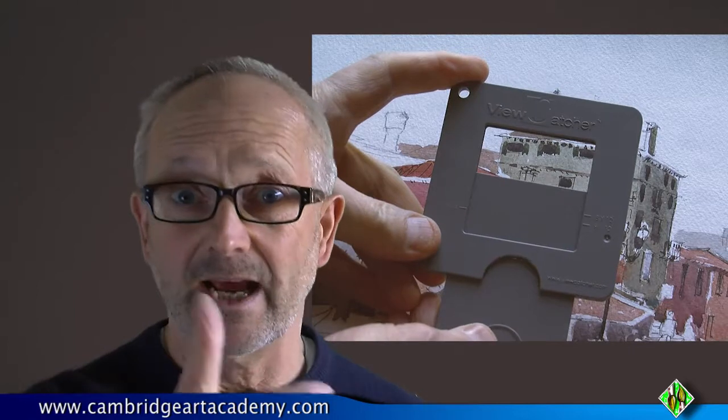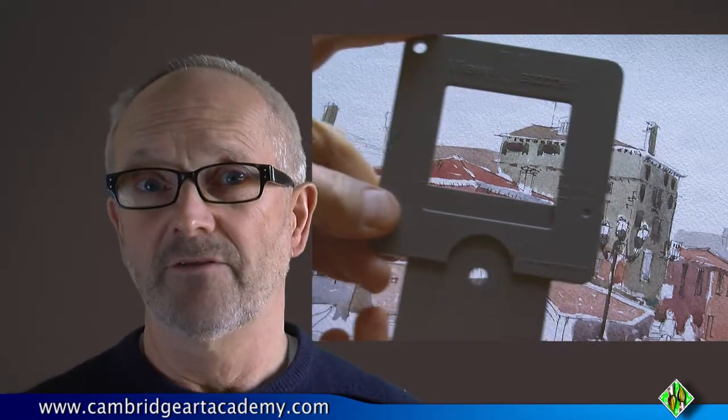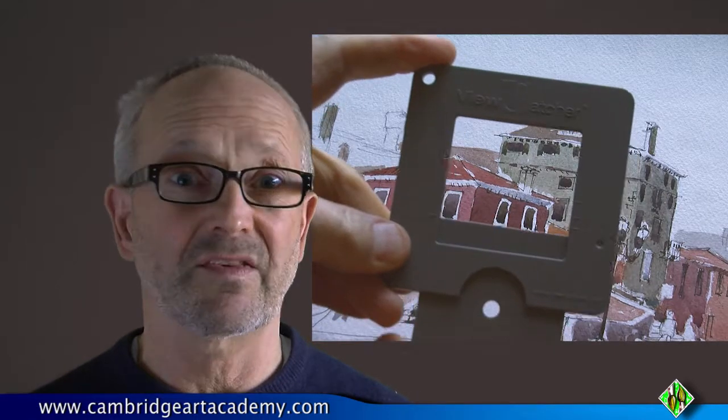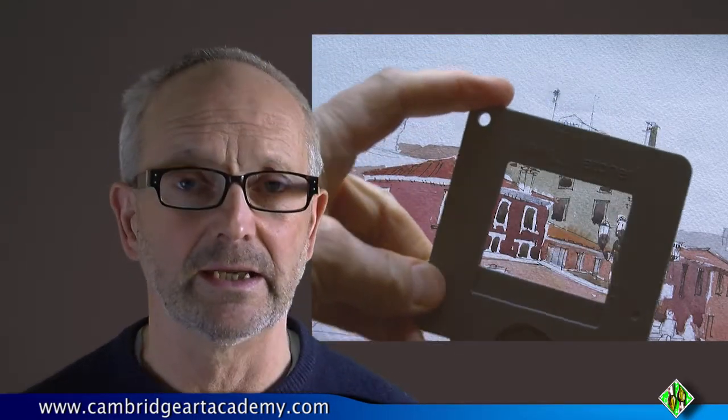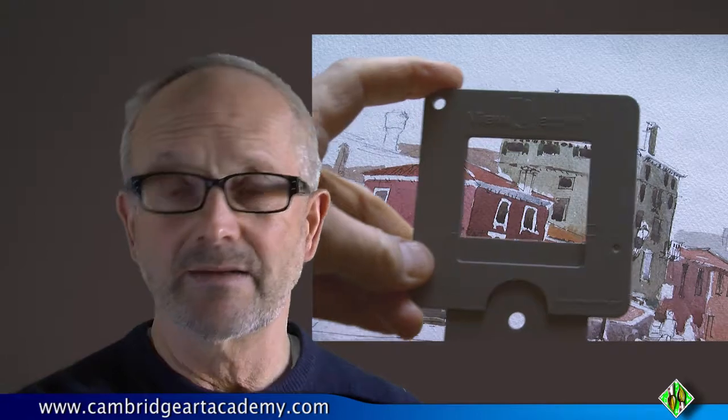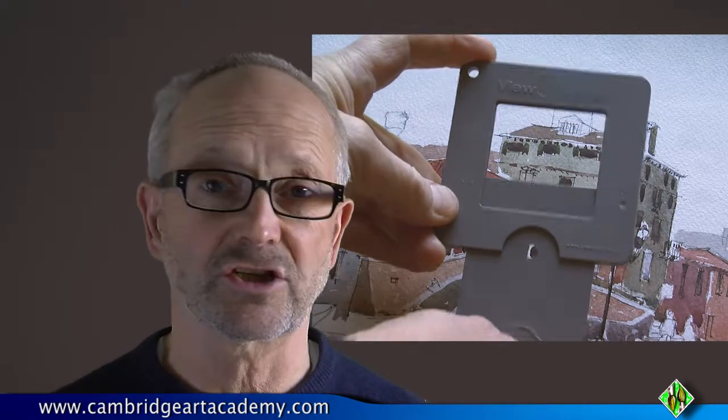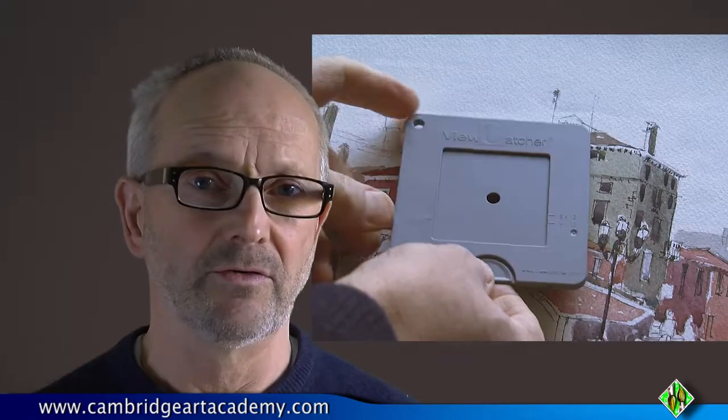For a start, it's got a sliding mechanism so you can infinitely adjust from square to a really thin format. I used it for doing a thin format painting recently. On location, I could just hold it up and slide the mechanism up and down until I got framed the right kind of proportions that I wanted. Really simple.